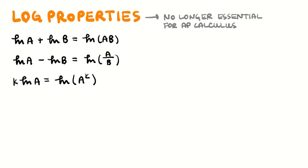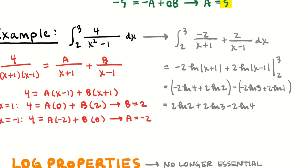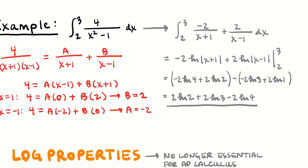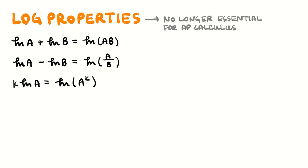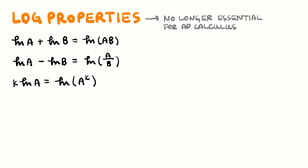Log properties you might should know — though not absolutely essential for AP Calculus these days — are: the sum of logs is the log of the product of the arguments; the difference of logs, log A minus log B, is the log of A divided by B; and the power property, k times log A is the log of A to the k. These properties all fall directly from exponent properties. I've got a video on log properties in my college algebra playlist if you're interested in why these are true.